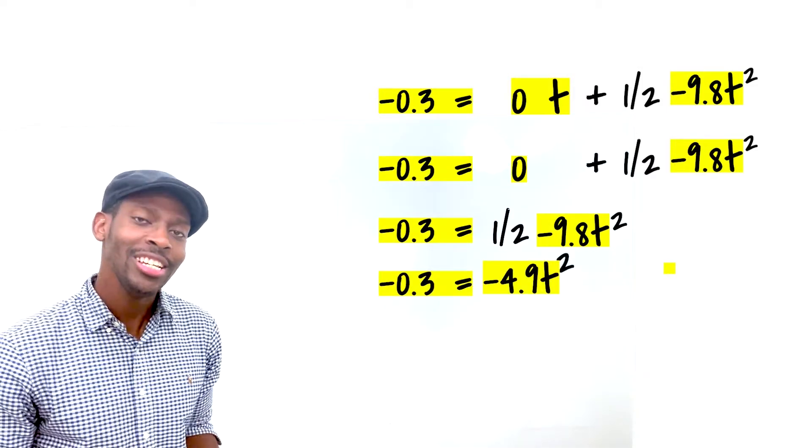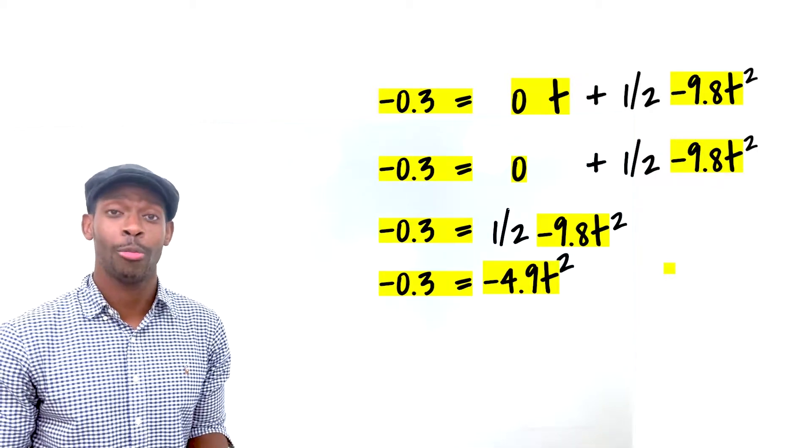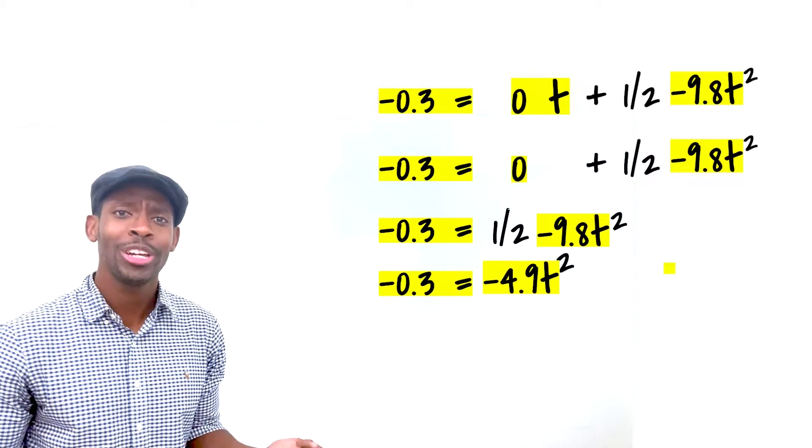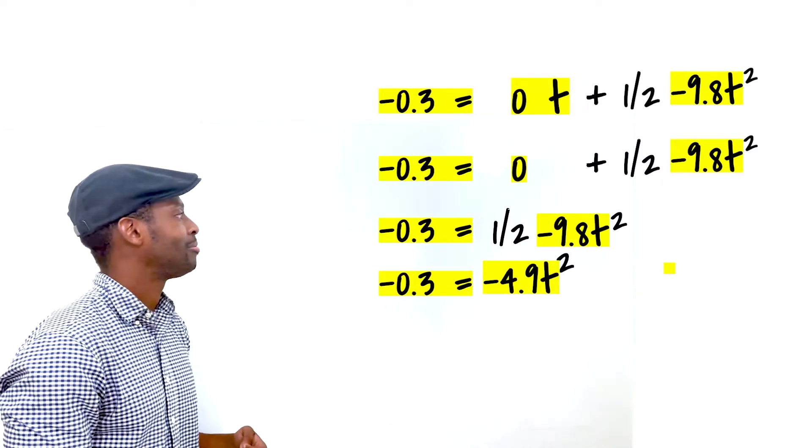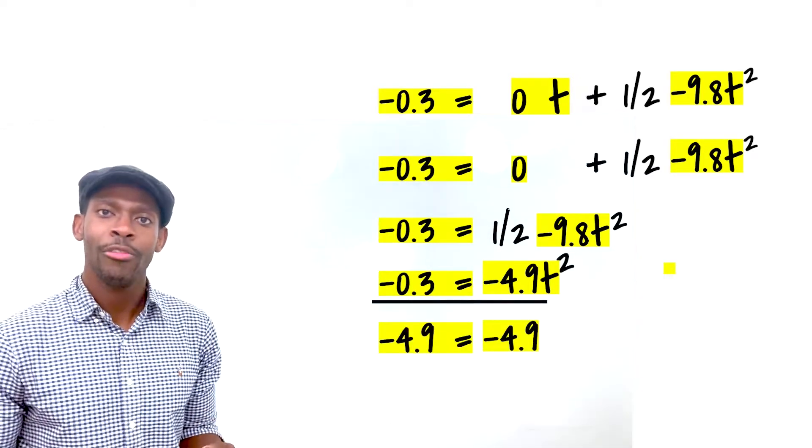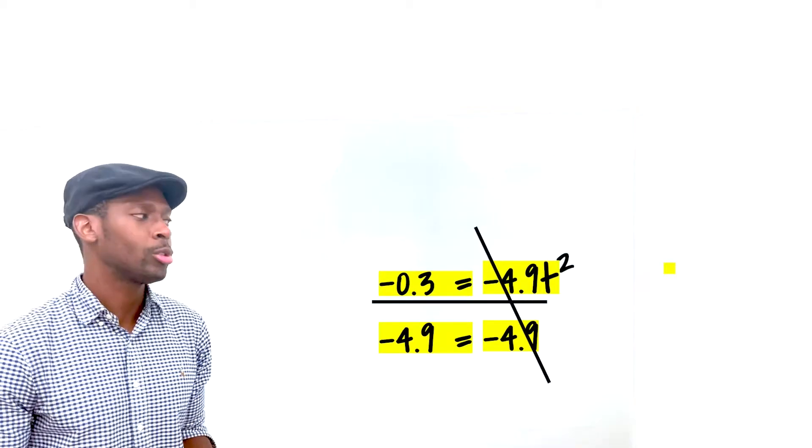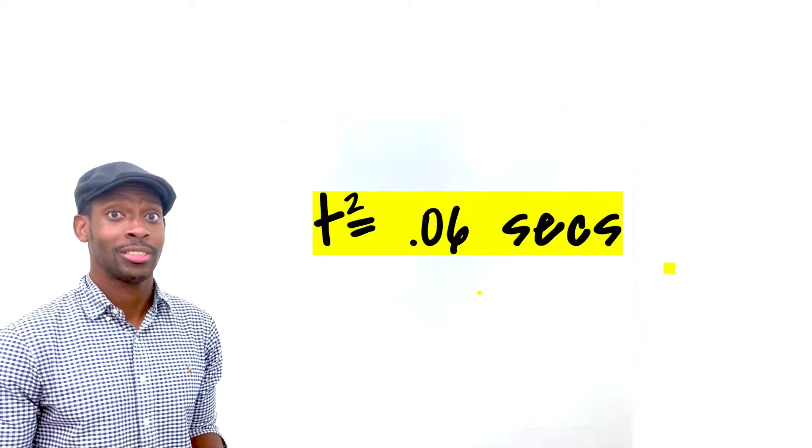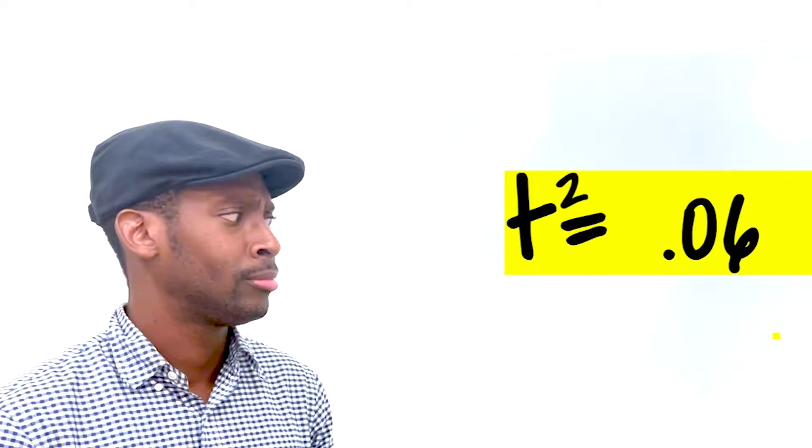We want to get t squared by itself. So it's being multiplied by negative 4.9. So how do we get rid of negative 4.9? Divide on both sides by negative 4.9. Negative 0.3 divided by negative 4.9 is equal to 0.06. That's t squared. Who cares about t squared? You need to leave.